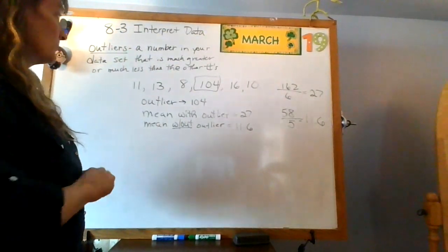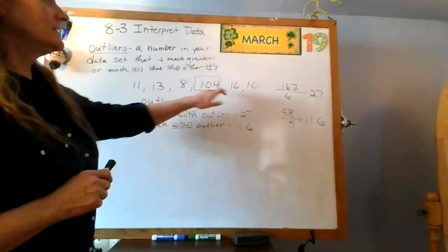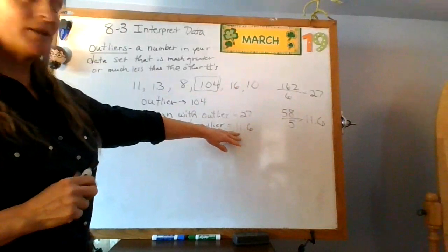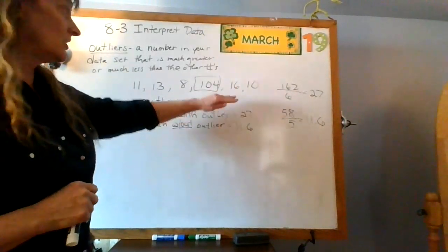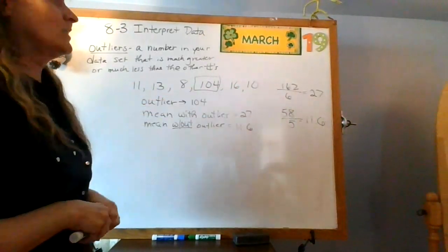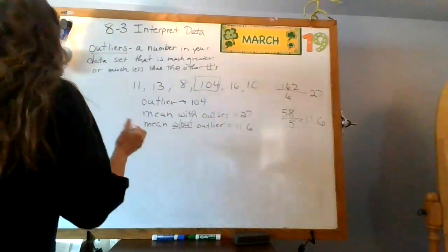Now, let's look at my numbers. 11, 13, 8, 16, 10. 11.6 seems like it's a representative of those without that 104, okay?